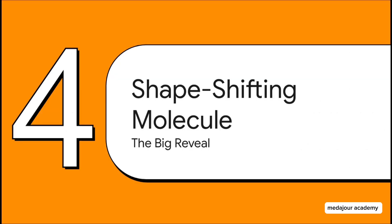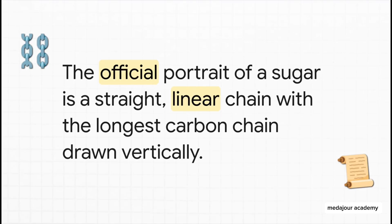So we've got our blueprint and our naming system — but now we get to the really good stuff. This is the part of the story that changes everything. If you crack open any chemistry textbook, you're going to see sugar drawn as a straight, flat, linear chain. This is its official portrait, called a Fischer projection. It's fine for counting carbons, but it is hiding a massive secret.